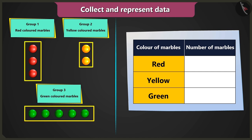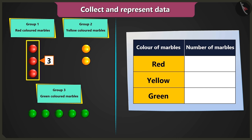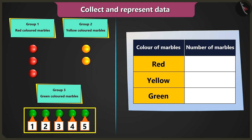What do we have to do next? Now we have to count the number of marbles in each group. There are one, two, and three red marbles in the first group. One and two, two yellow marbles in the second group. And one, two, three, four, and five green marbles in the third group.